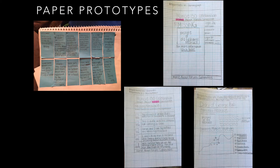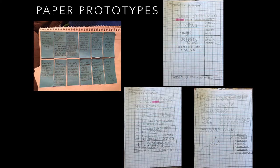Then, by using the storyboard, we came up with a set of sketches of what we wanted each of the pages to look like. Here are some examples of our paper prototypes. You can see at the top on the right, this is an example of our homepage for our website.